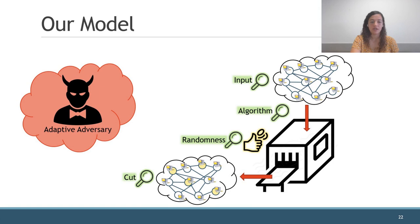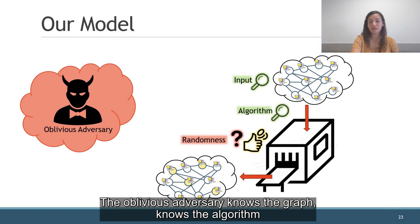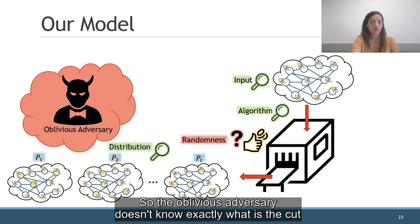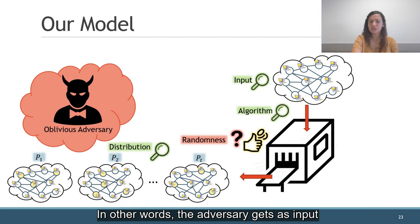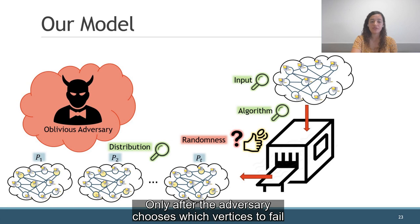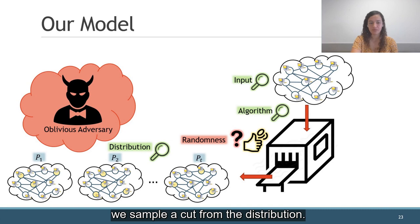In addition, we consider the oblivious adversary. The oblivious adversary knows the graph and knows the algorithm, but doesn't know the random coin tosses. So the oblivious adversary doesn't know exactly what is the cut, but knows what is the probability for every cut to be chosen. In other words, the adversary gets as input a distribution over cuts, and given this distribution, he has to choose which vertices to remove. Only after the adversary chooses which vertices to fail, we sample a cut from the distribution. Our goal in this scenario is to maximize the expected size of the cut after failure.